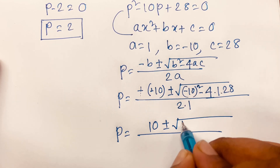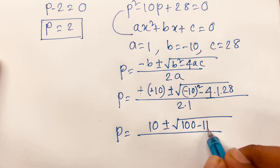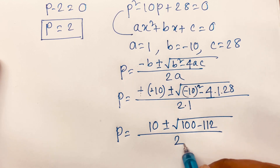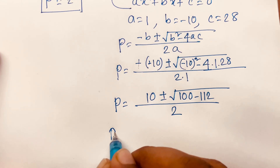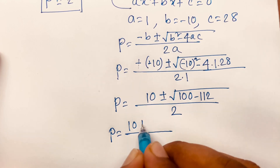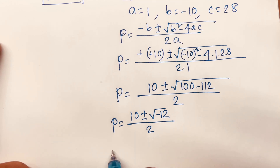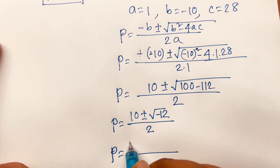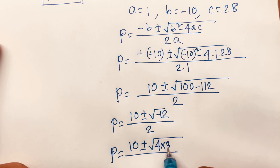Simplifying inside the square root: 100 minus 112 equals minus 12. So p equals 10 plus or minus square root of minus 12 over 2. We can rewrite minus 12 as 4 times 3 times i², since i² equals minus 1.